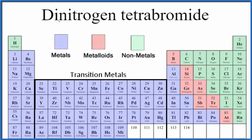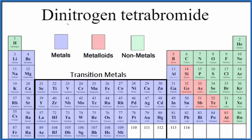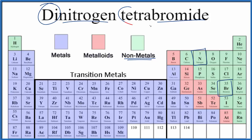Let's write the formula for dinitrogen tetrabromide. The first thing we need to notice, we have nitrogen — nitrogen right here on the periodic table — that's a nonmetal. Bromide, we're talking about bromine, that's also a nonmetal. Two nonmetals means we have a molecular or covalent compound, and we need to take these prefixes into account when we write the formula for dinitrogen tetrabromide.